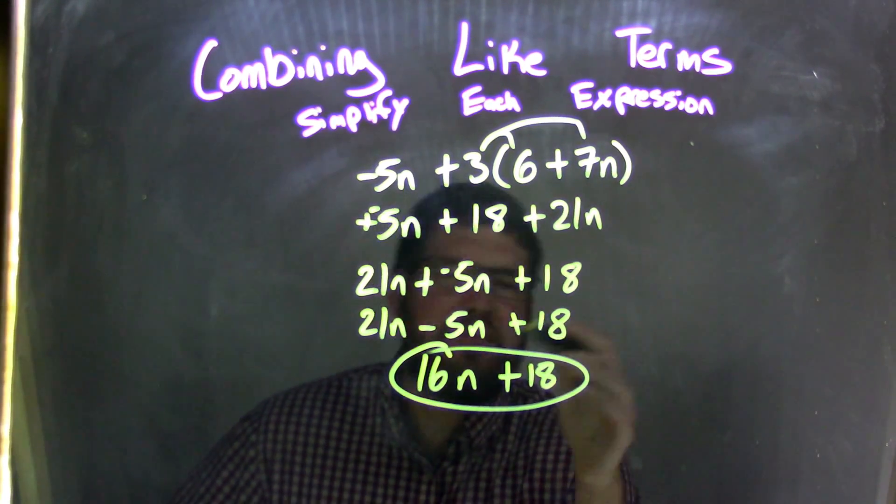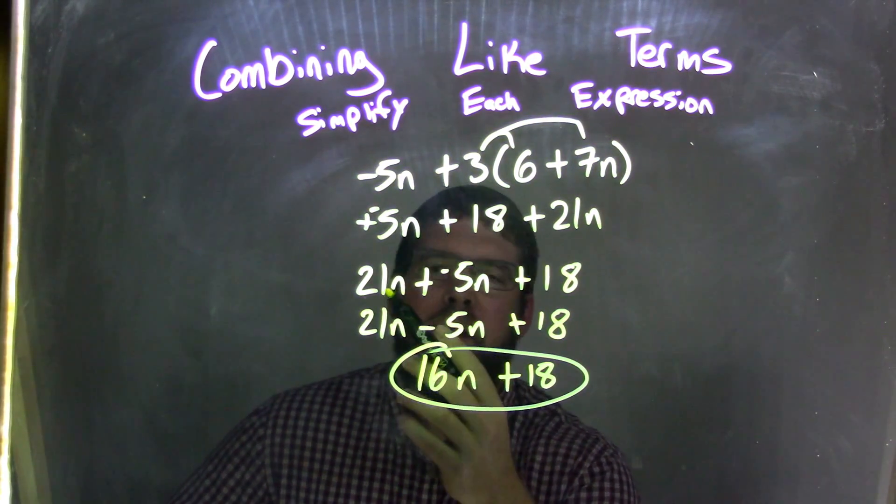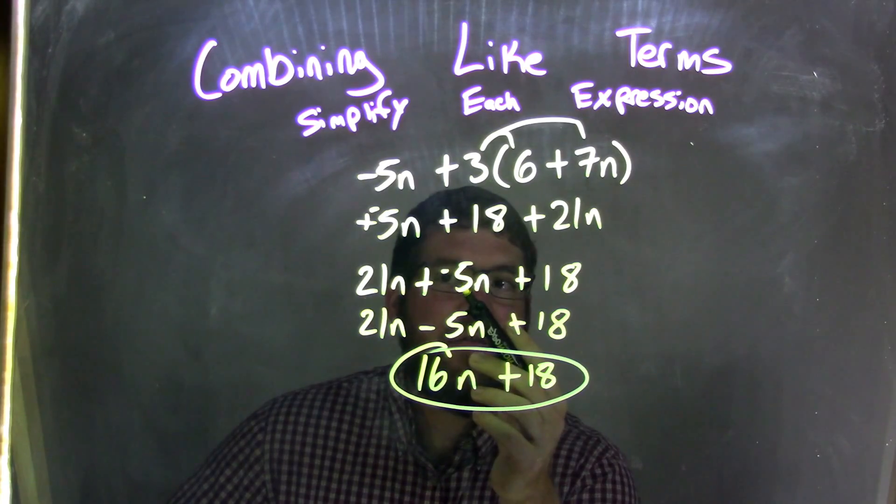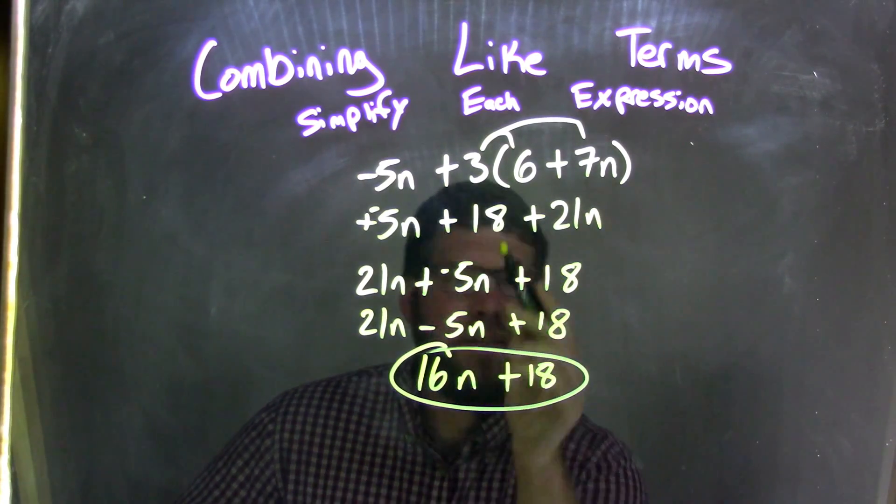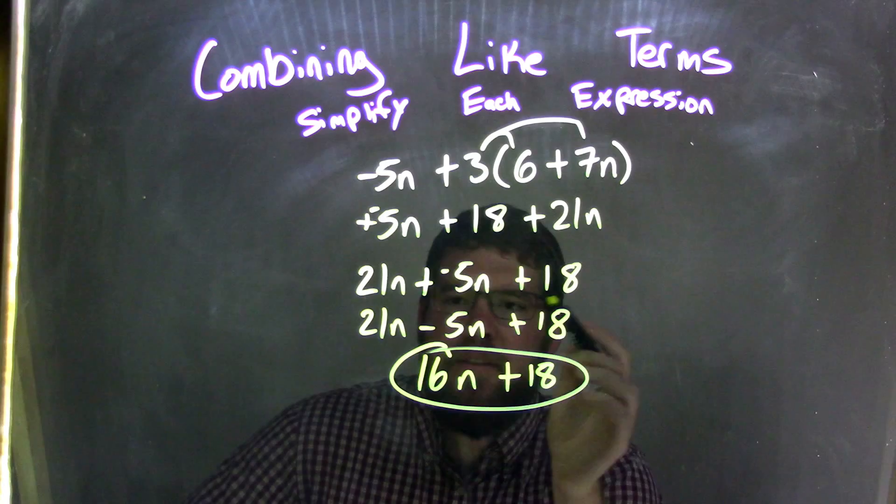You don't have to do that, but just kind of going through it. So 21n here first plus a negative 5n, brought that down and an 18. I got all three numbers, which is great. 18 at the end.